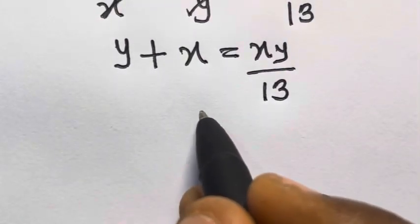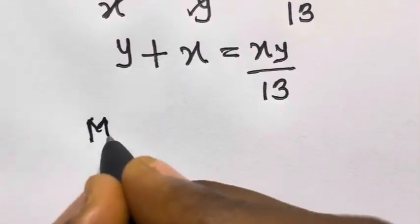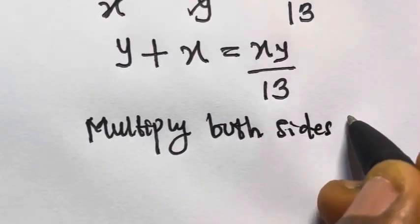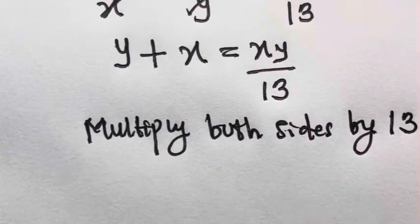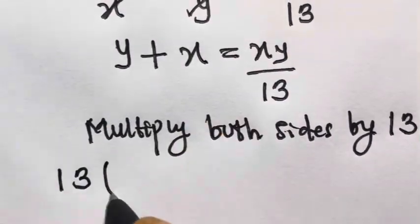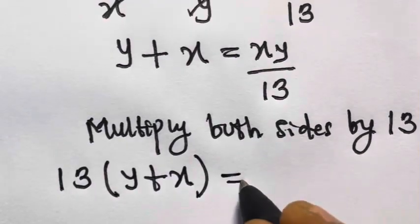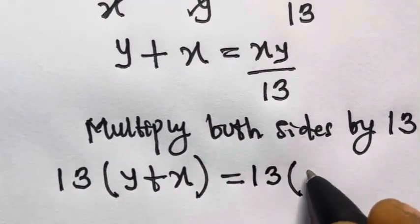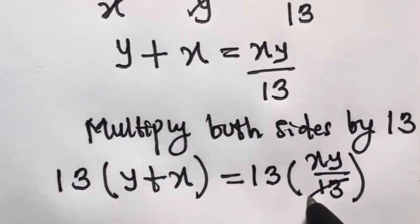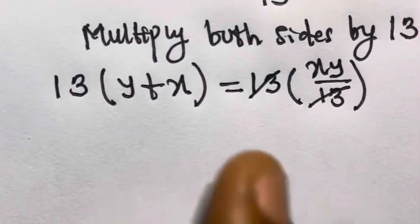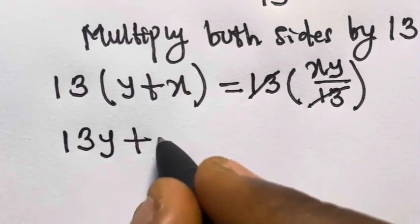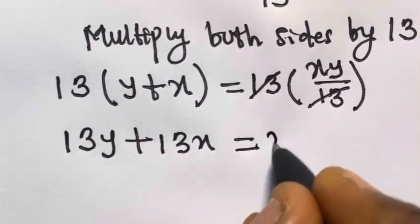So again, we multiply both sides by 13 to cancel this 13. If you do that, we will have 13 times y plus x equals 13 multiplied by xy divided by 13. So this 13 cancels this 13, and we will have 13y plus 13x equals xy.